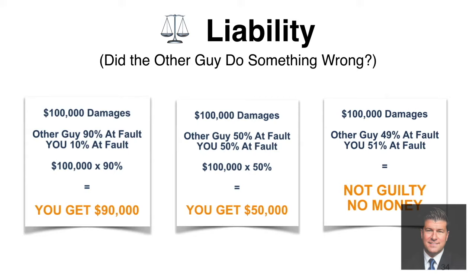In the middle scenario, if the jury decides you're each 50% responsible, your damages are reduced by 50% — so instead of $100,000, you only get $50,000. The third scenario is the one to really watch out for: if you have $100,000 in damages, the other guy is 49% at fault, and you are 51% at fault — not guilty, no money for you. That's the law in Illinois: if you're more than 50% at fault, you can't recover any money, even though the other guy is 49% responsible.